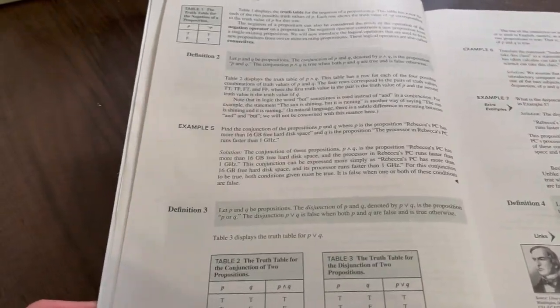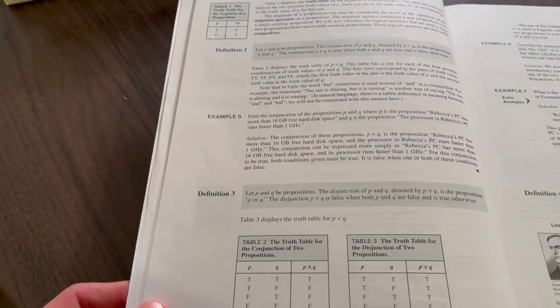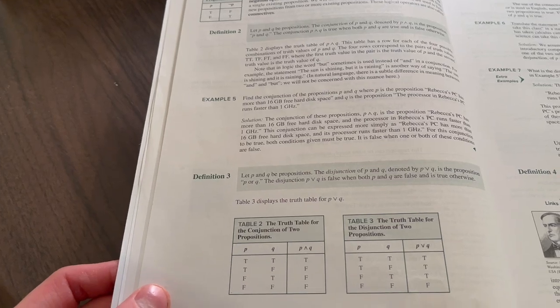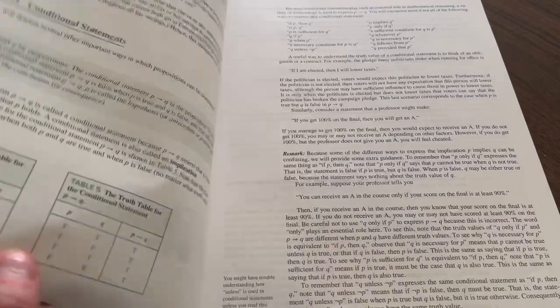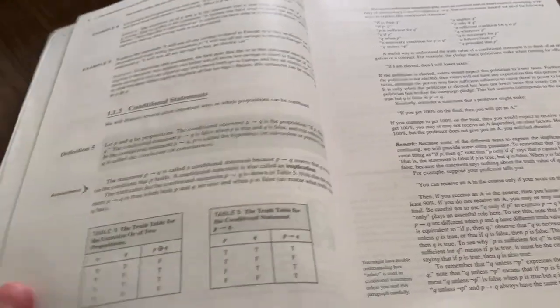And then, as you might suspect, we can think about truth tables, of course. We can think about the conjunction of two propositions, the disjunction of two propositions. And there are many applications in this book, many problems.